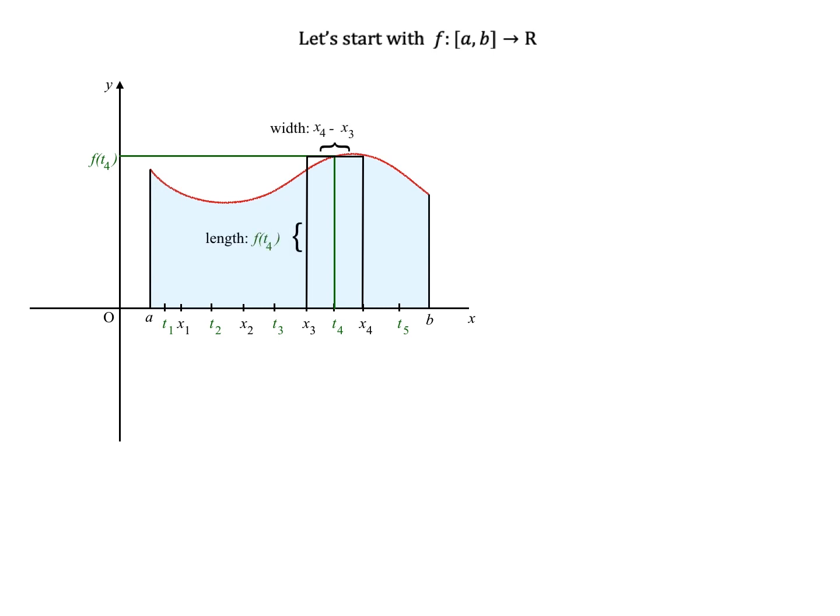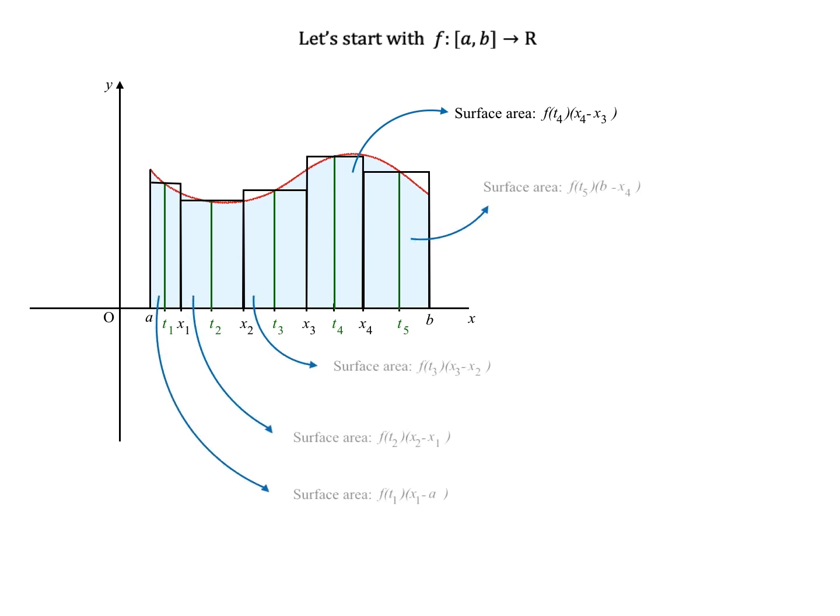The surface area of this rectangle would be the width times the length. In other words, f of t4 times x4 minus x3. For all the other rectangles we get similar formulas. The sum of the surface area of all these would be an approximation of the area under the graph.